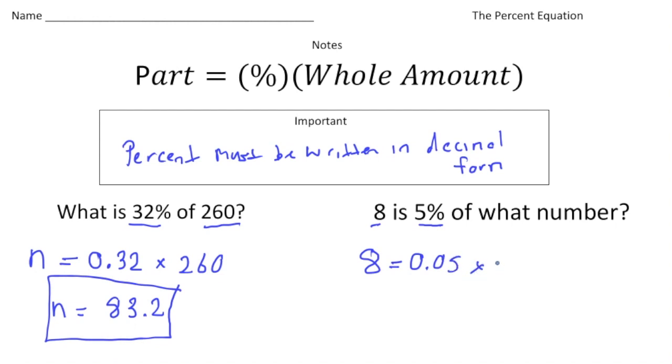times the unknown, which is n. So this one's a little bit trickier to solve for, because we have to solve for n. So 8 is going to equal 0.05n. And to solve for n, this means 0.05 times n. So the opposite of multiplying is dividing. So I'm going to divide both sides by 0.05. And when I do that, we have n all by itself, and that's what we want. When I do 8 divided by 5 hundredths, we get an answer of 160. So 8 is 5% of 160.